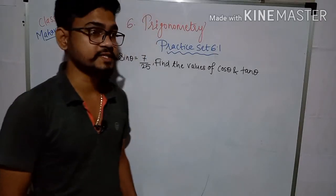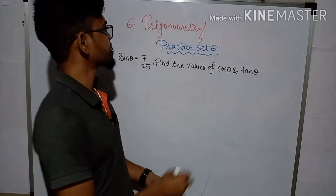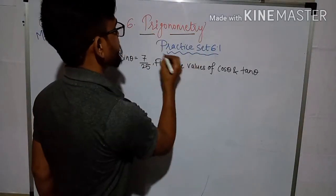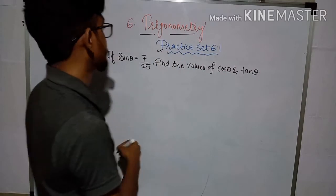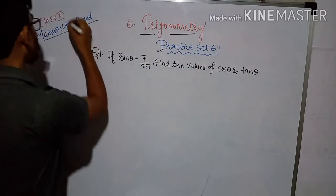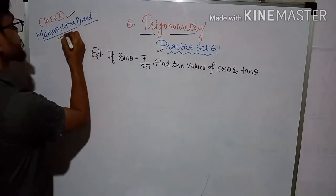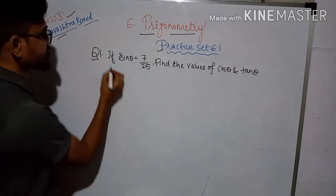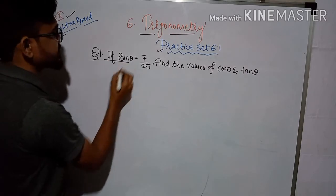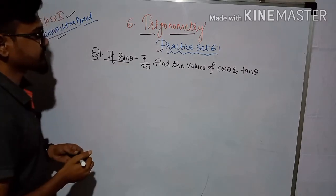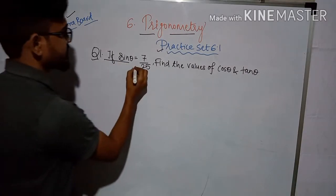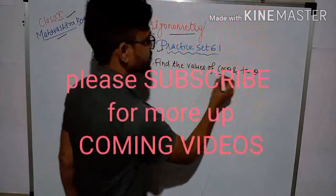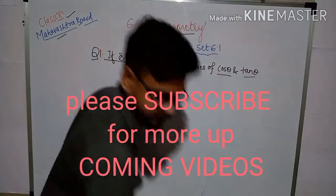Hello everyone. In this video we are going to start with Trigonometry Practice Set 6.1 Class 10. Question number 1: If sin theta is equal to 7 by 25, find the values of cos theta and tan theta.